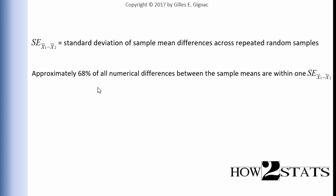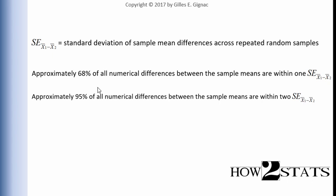That was exactly true of the one sample t-test as well, and it's also true of the standard error associated with a mean. Finally, 95% of all numerical differences between the sample means are within approximately two standard errors away from the mean associated with the differences. Just like the one sample t-test, the standard error value can be multiplied by approximately 2.0 — depending on the sample size — to get the 95% multiplier, which allows calculation of confidence intervals associated with the difference between two sample means.